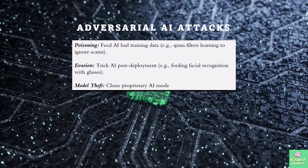AI isn't just for the good guys — hackers abuse it too. In poisoning attacks, they corrupt training data so your spam filter starts allowing phishing emails. Evasion attacks tweak inputs to fool AI systems, like those weird pattern glasses that trick facial recognition. There is even a black market for stolen AI models — imagine a scammer cloning your bank's fraud detection AI to bypass it. As AI gets smarter, so do the attacks.